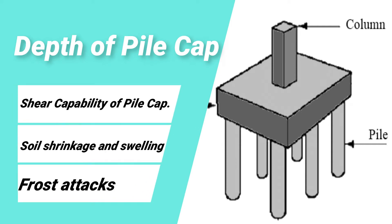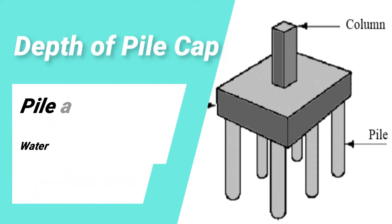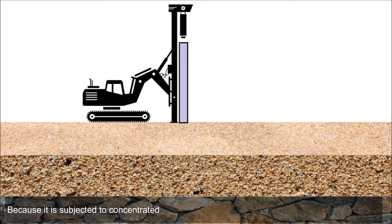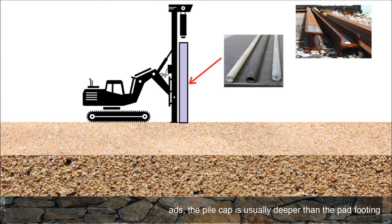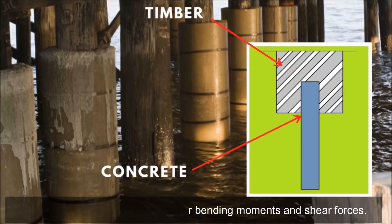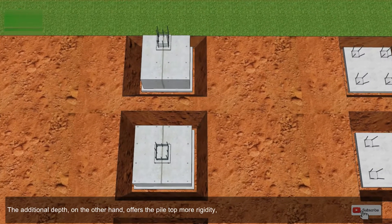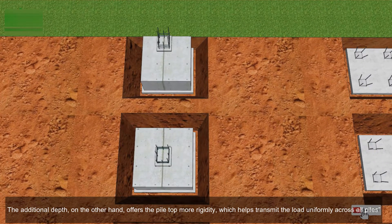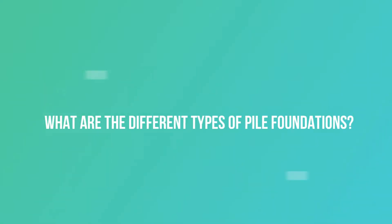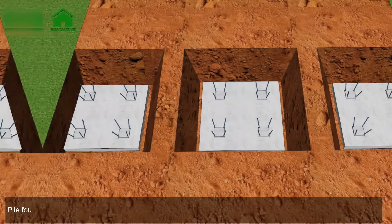The depth of a pile cap is dependent on the following factors: shear capability of the pile cap, soil shrinkage and swelling, frost attacks, pile anchorage, water table, soluble sulfates, and holding bolt assemblages for steel columns. Because it is subjected to concentrated loads, the pile cap is usually deeper than the pad footing. This results in substantially stronger bending moments and shear forces, but the additional depth offers the pile top more rigidity, which helps transmit the load uniformly across all piles.